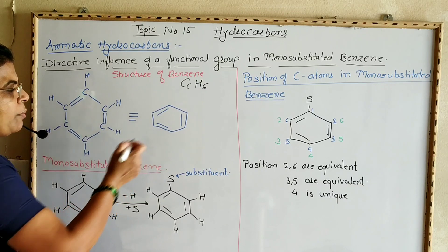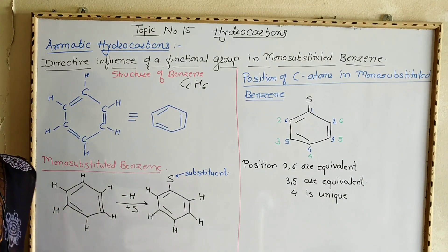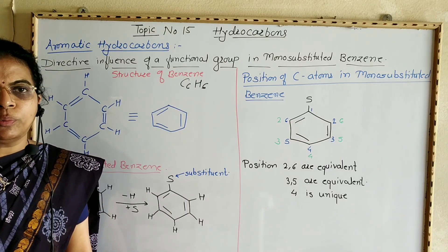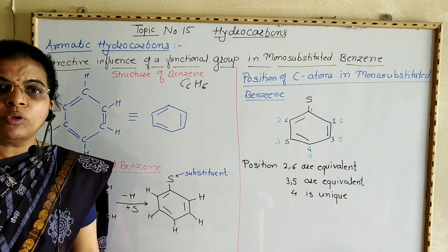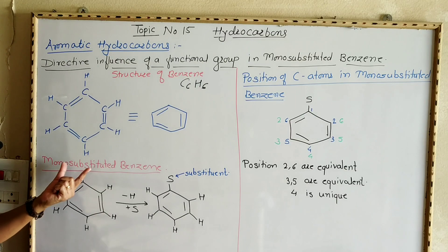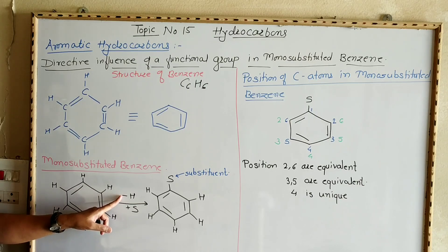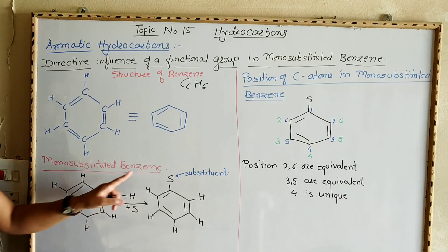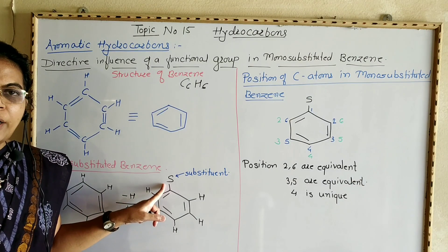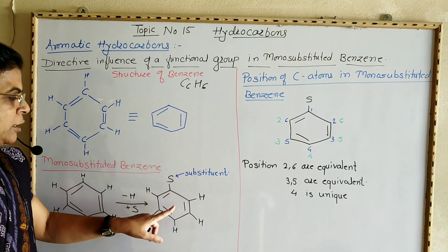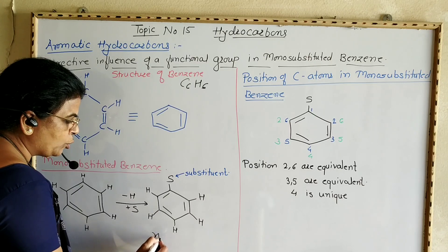This structure of benzene is a hexagonal ring having alternating carbon-carbon single and double bonds. When benzene undergoes electrophilic substitution reaction, we get a monosubstituted product. In monosubstituted benzene, one hydrogen atom is replaced by any substituent — either a halogen atom, hydroxy group, nitro group, etc. — and since there is only one substitution, it is called monosubstituted benzene.